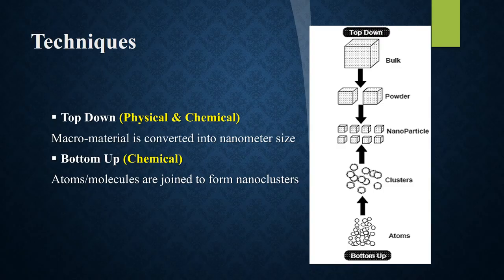Generally there are two techniques. The first is called the top-down approach, in which macromaterial or bulk material is converted into nanometer size; these can be physical or chemical ones. The second technique is the bottom-up technique. It is a chemical technique in which atoms or molecules are joined to form nanomaterials or clusters.